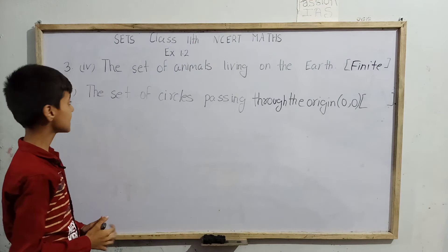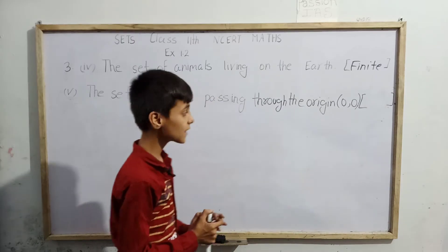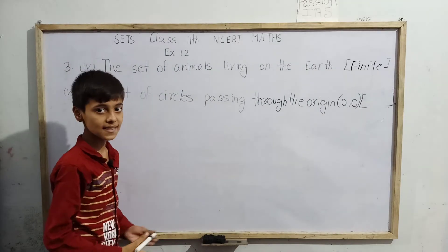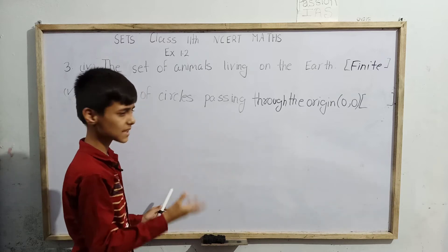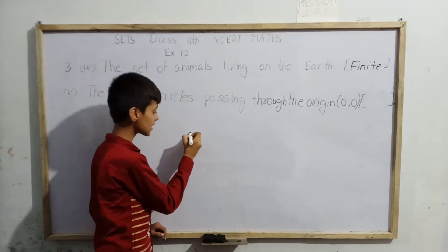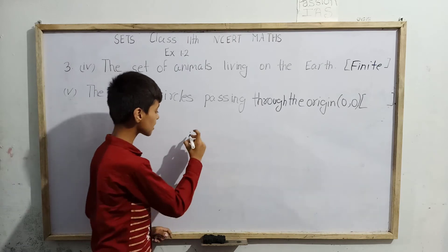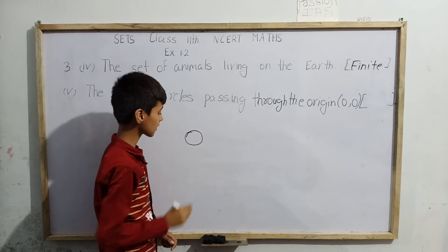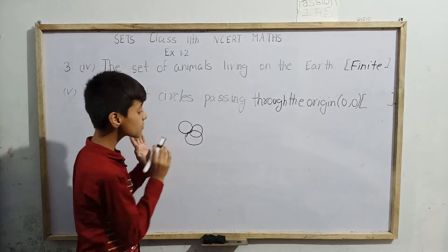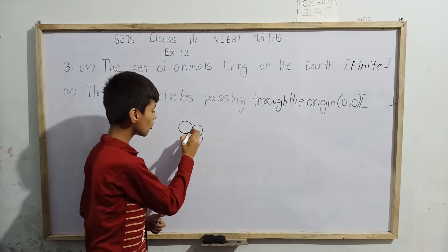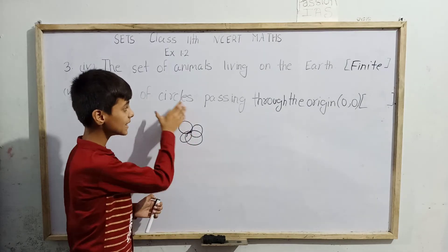Next, part five: the set of circles passing through the origin (0, 0). To check whether this is a finite or infinite set, let us draw some circles through (0, 0). Imagine this point is the origin. From here, we can draw one circle, and then another of a different radius, and as many circles as we want — all passing through the same point (0, 0).